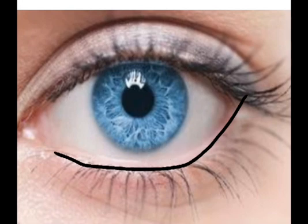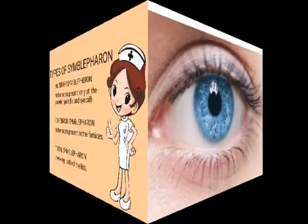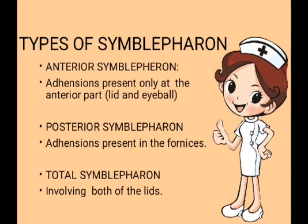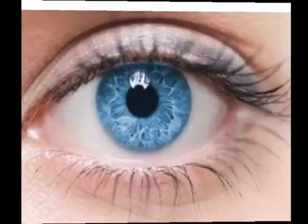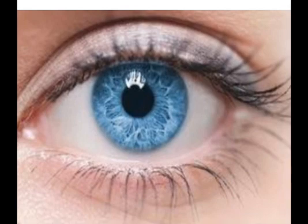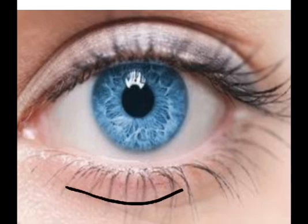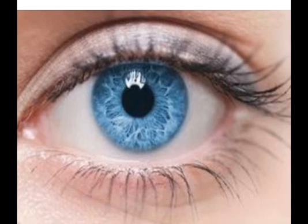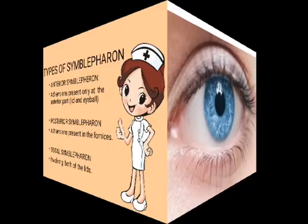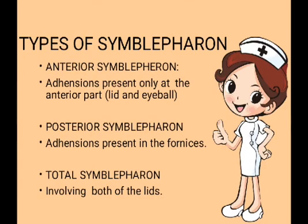The second type is posterior symblepharon. In this case, adhesion is present at the fornices. The fornix is the part present between the palpebral and the bulbar conjunctiva, which joins them and allows eyelid movement. The palpebral conjunctiva ends almost here when we look inside the eye, so the fornices are present there, and the sticking takes place at the fornices.